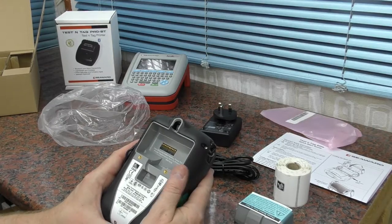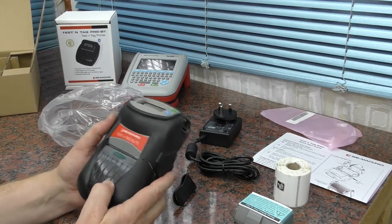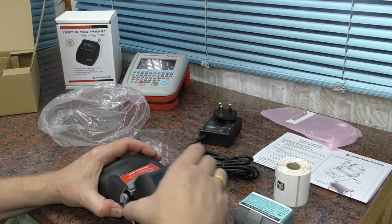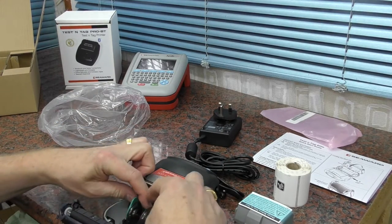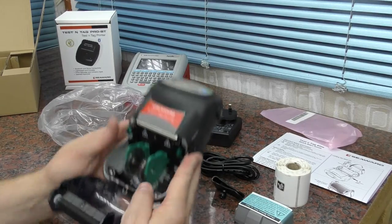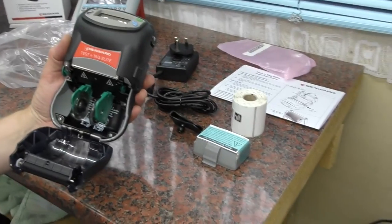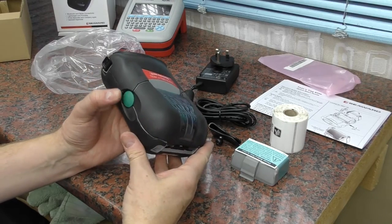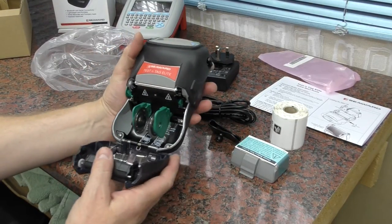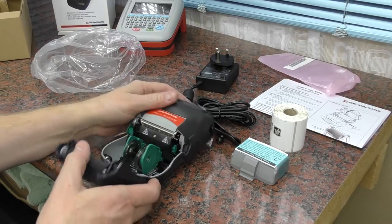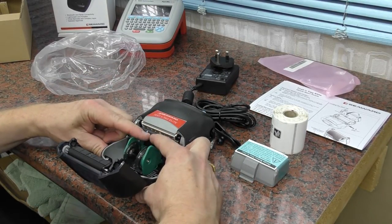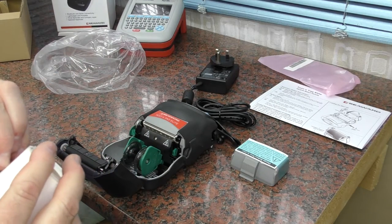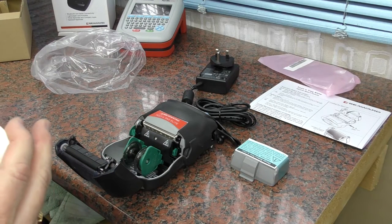So Zebra battery pack in the back there. Looks like there is a push button on the side to release the mechanism. And the labels just sit in here. Let's just bring this down a little bit. So yeah, as you can see, push button release of the label cover. And then pull these apart and pop the labels in, which we will do now.